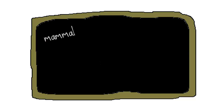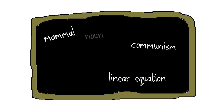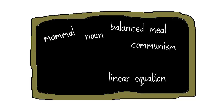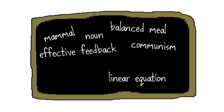In science, this could be something like the concept of mammal, or in math, linear equation. It could be a social studies topic like communism, or a grammar term like noun. In health, it might be the characteristics of a balanced meal. In corporate training, the characteristics of effective feedback. In culinary school, the qualities of a good stock, or in music, the characteristics of the Baroque style.